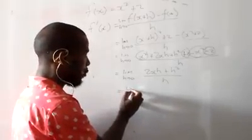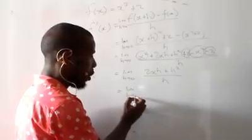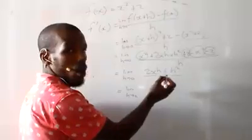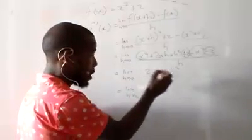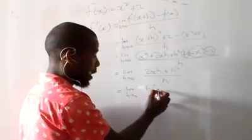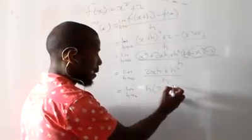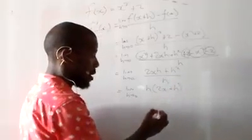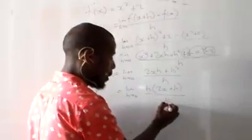Going down, lim h→0. From here, you are going to take out a common factor, which is h. Take it outside, you are left with 2x. And then on the other h, you are left with 1h because it's squared. All over h.